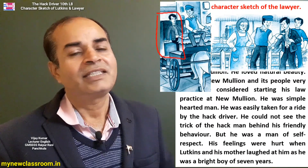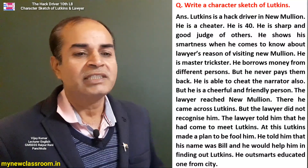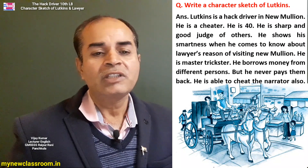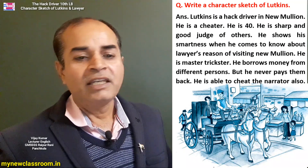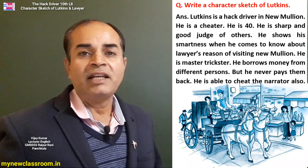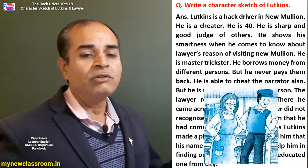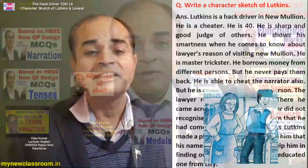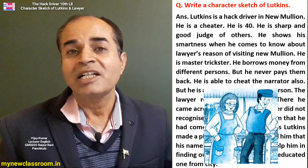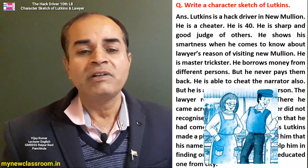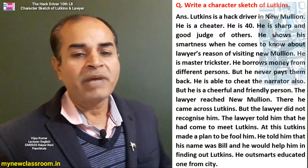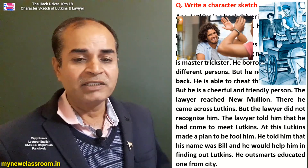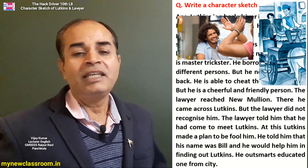The second character sketch frequently asked from this lesson is about Lutkins. Lutkins is a hack driver in New Mullion. He is a cheater and a fraud. He is sharp and a good judge of others. He shows his smartness when he comes to know about the lawyer's reason for visiting New Mullion. He is a master trickster — he borrows money from different persons but never pays them back. He is able to cheat the narrator as well, but he is also a cheerful and friendly person.